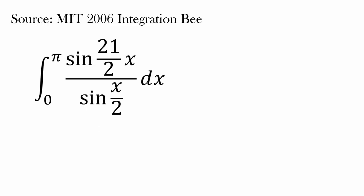This is the 10th video covering questions from MIT 2006 integration B, and we're trying something more challenging than usual. The question is: the integral from zero to pi of sine of (21/2)x divided by sine of x/2, dx. And this looks pretty crazy — you have sine of 21/2, which isn't even an integer, and sine of x/2. This just looks mind-boggling. How do we even start this?